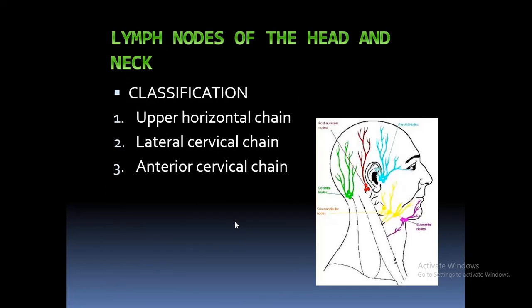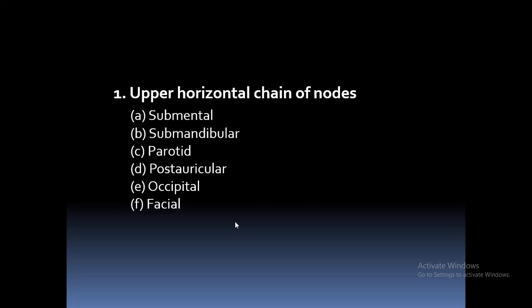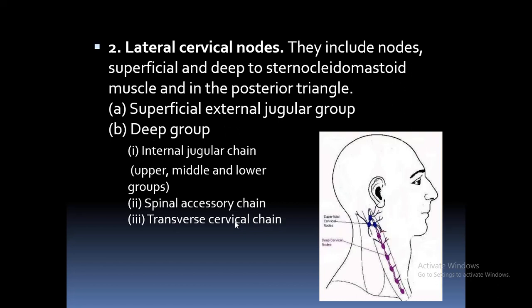How can we classify the lymph nodes of the head and neck? There are various classification systems. The first is to classify into the upper horizontal chain, the lateral cervical chain, and the anterior cervical chain. The upper horizontal chain includes submental, submandibular, parotid, postauricular, occipital, and facial nodes. The lateral cervical nodes include a superficial external jugular group and a deep group, which is further divided into nodes along the internal jugular chain, the spinal accessory chain, and the transverse cervical chain.